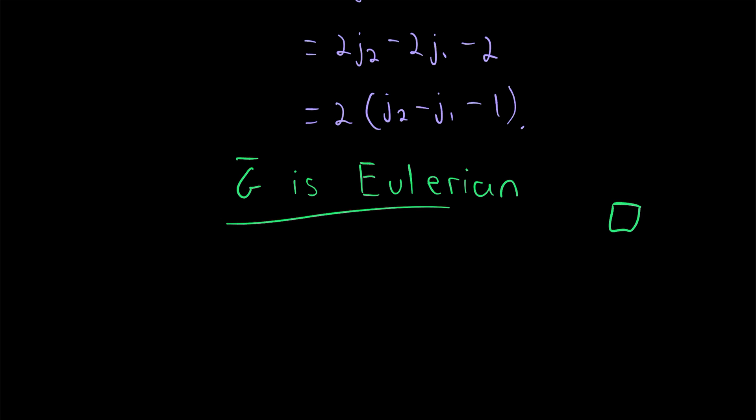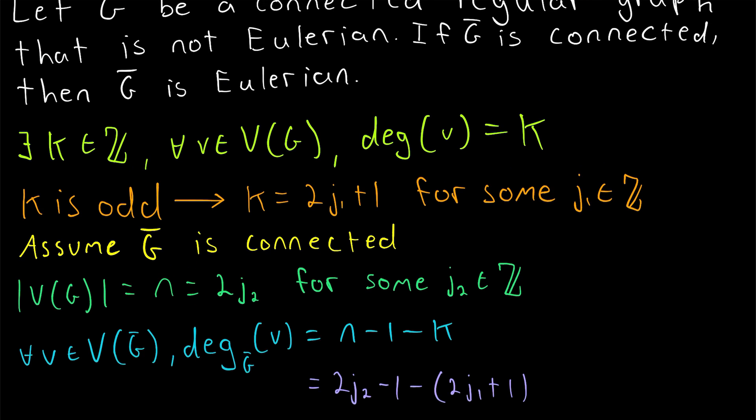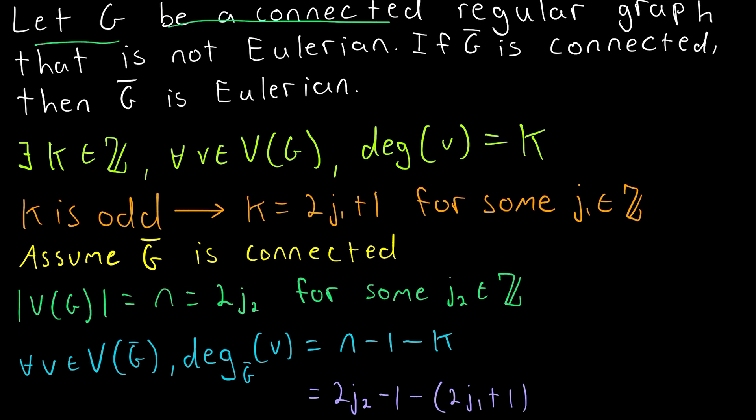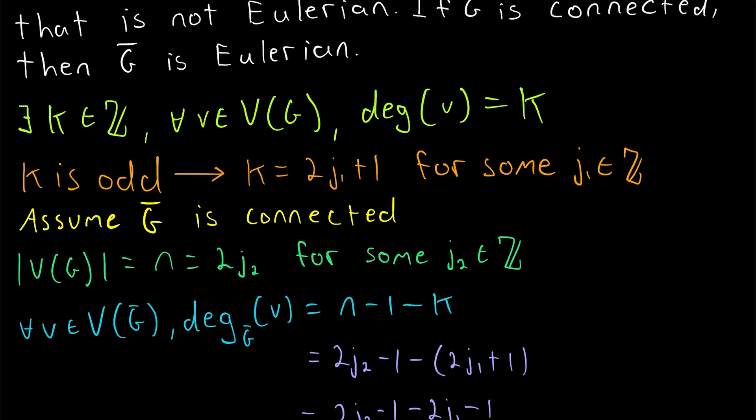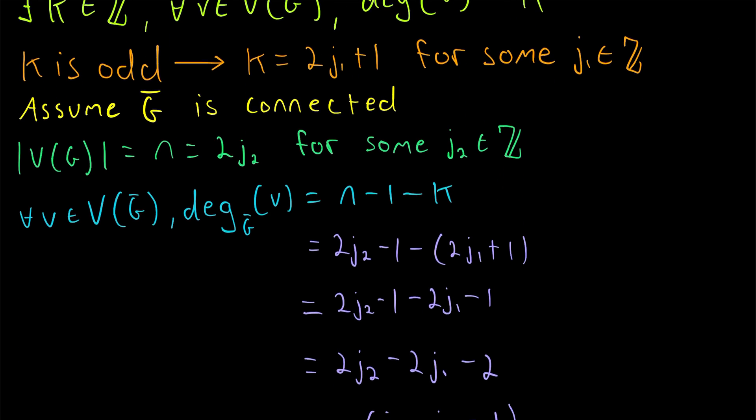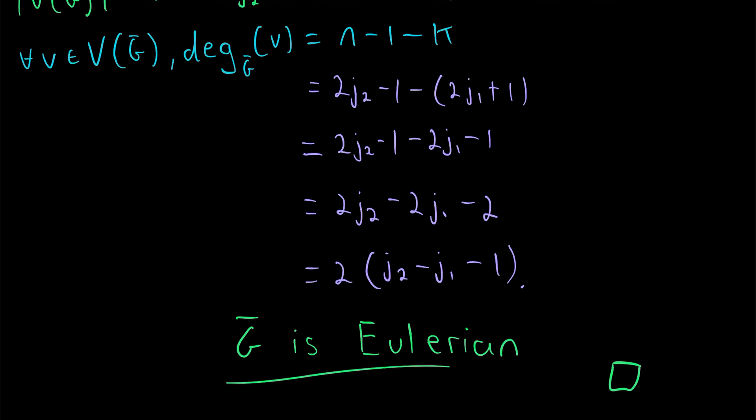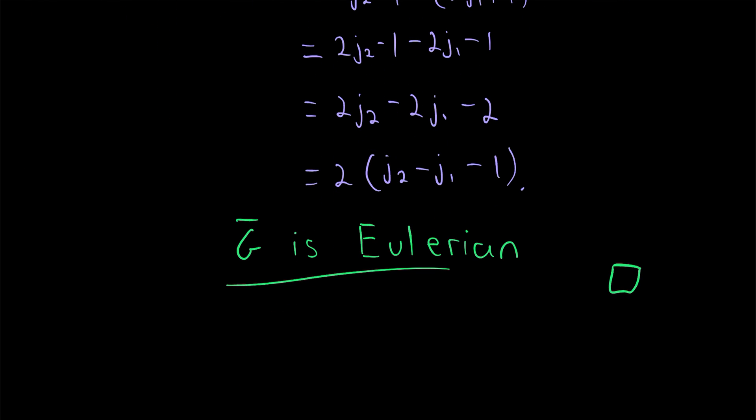So one more time we will state the result that we just proved. If G is a connected regular graph that is not Eulerian, and the complement of G is connected, then the complement of G is Eulerian. And all it really comes down to is making an argument about the even or oddness of the degrees of the vertices in G and G complement. So I hope this video helped you understand how to prove this fun little graph theory result. Let me know in the comments if you have any questions, need anything clarified, or have any other video requests. Thank you very much for watching. I'll see you next time. And be sure to subscribe for the swankiest math lessons on the internet.